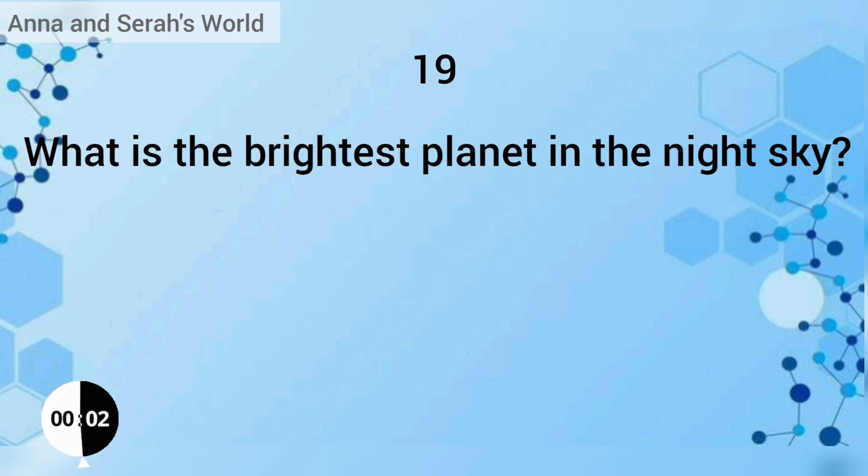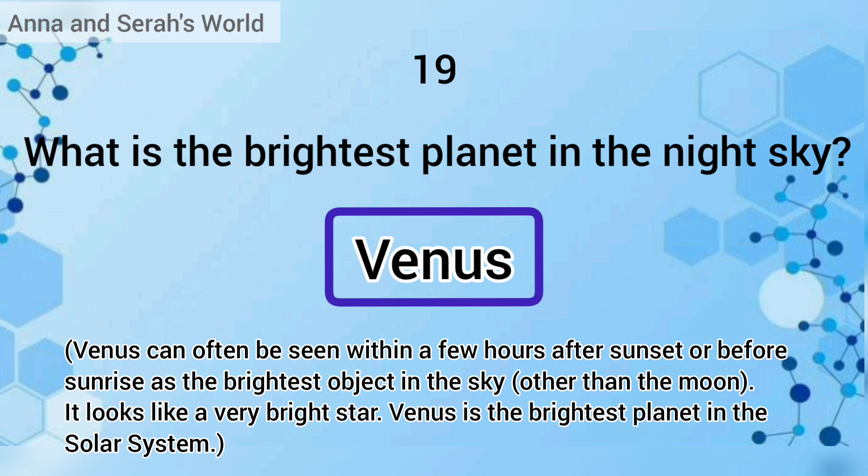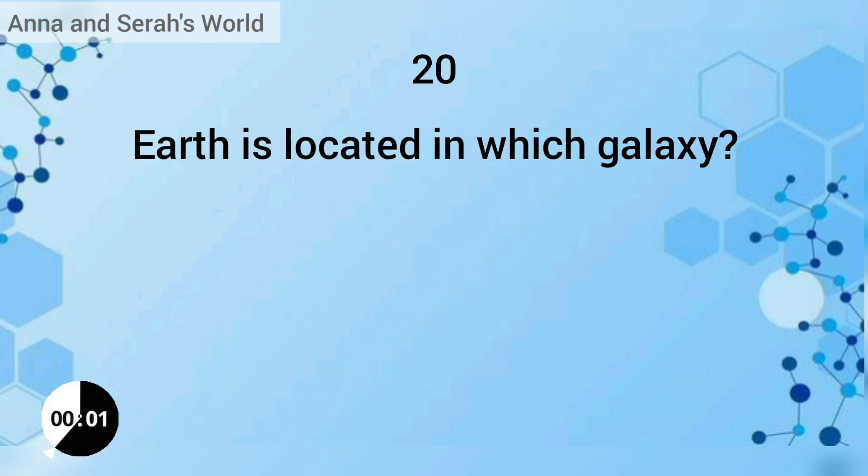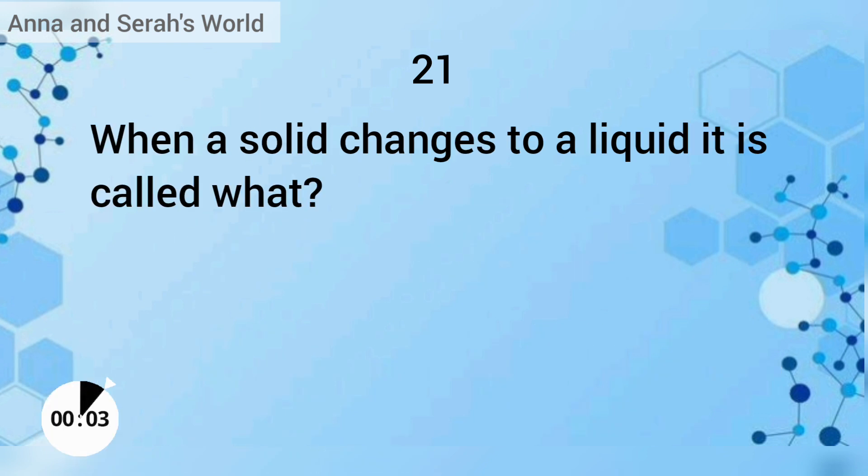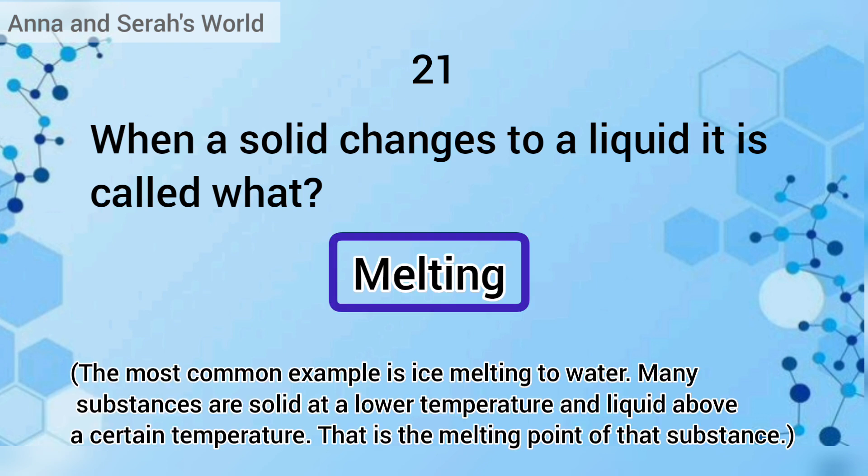What is the brightest planet in the night sky? The answer is Venus. Earth is located in which galaxy? The answer is the Milky Way galaxy. When a solid changes to a liquid, it is called melting.